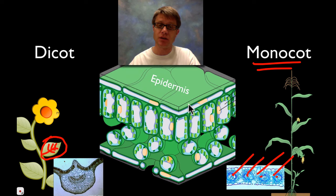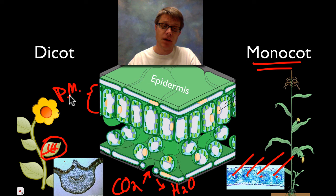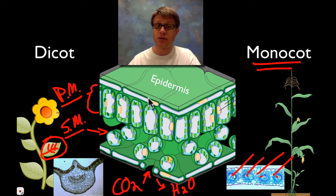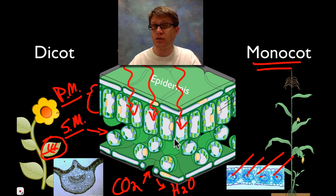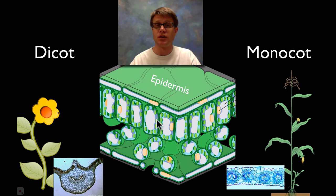Taking a cross section of the leaf, we have the epidermis on top with a waxy cuticle above that, and epidermis on the bottom. You can see the stomata on the bottom, which take in carbon dioxide and also allow water to leave. We have the palisade mesophyll above and the spongy mesophyll below. The palisade mesophyll is where photosynthesis takes place — light comes in and hits chloroplasts. Water comes through the vascular tissue, and carbon dioxide diffuses in through the space in the spongy mesophyll and is used in photosynthesis.